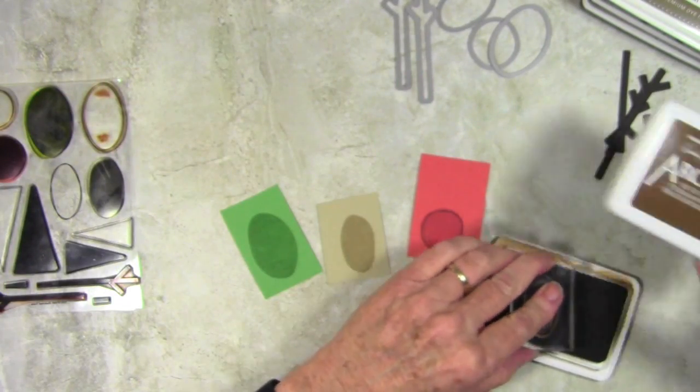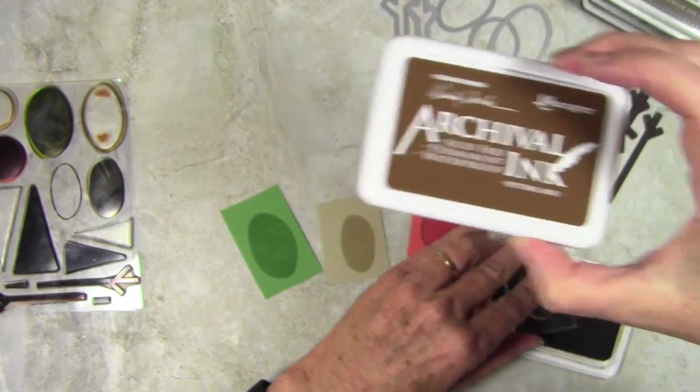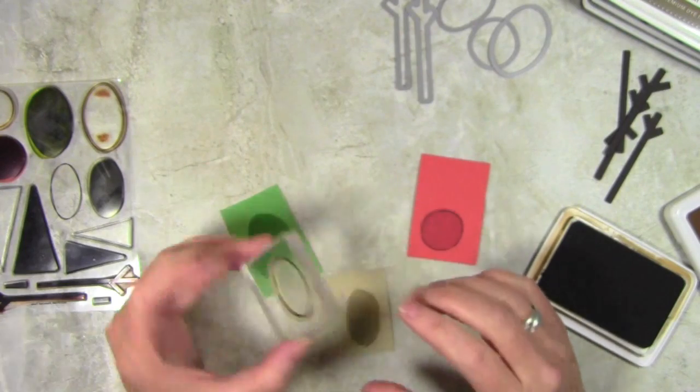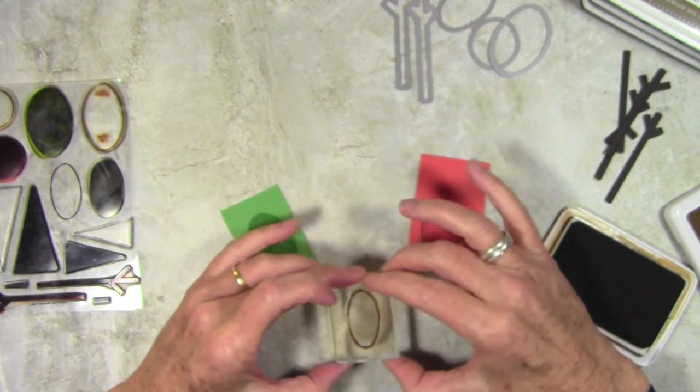Next, I'm stamping the little rings that coordinate with these shapes. I'm using the Potting Soil Archival Ink. The reason I'm using the Archival Ink is because it dries very quickly.